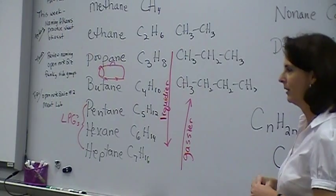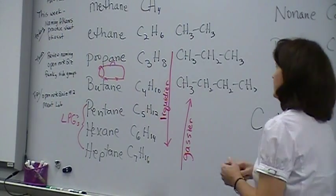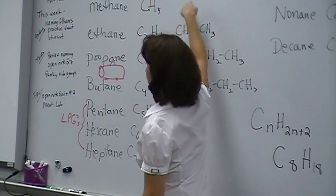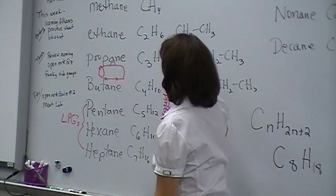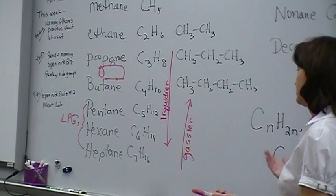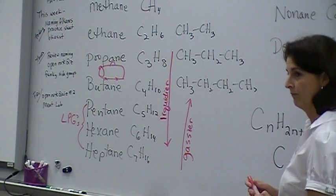As far as melting point goes and boiling point stuff, these guys have the lower boiling points and melting points. These have the higher. So you increase the carbons, it becomes more liquidy. Eventually it becomes solid-y.